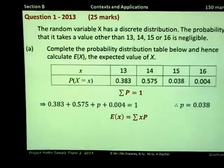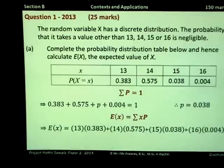If we multiply each of these out and sum up the totals, then the expected value of X gives us 13.663.